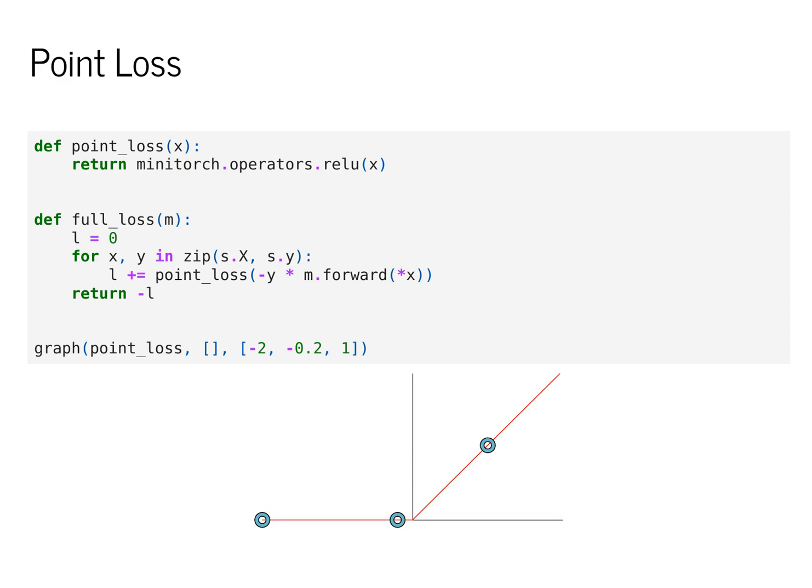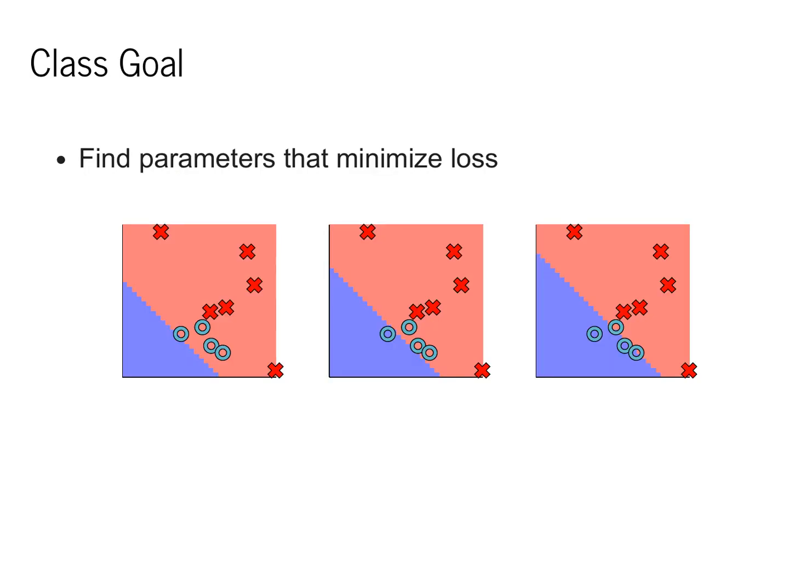We'll simply take loss based on how well or poorly each point was classified. If it's on the correct side, we take no loss. If it's on the incorrect side, we take some loss. The main goal of the class is to fit the parameters of the model such that we get the best loss.